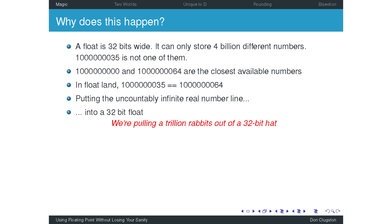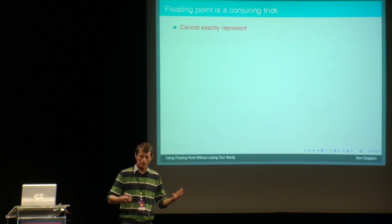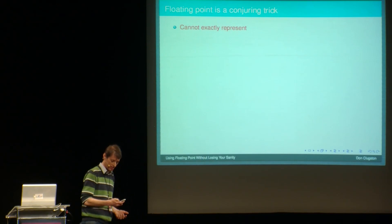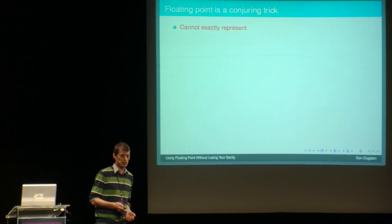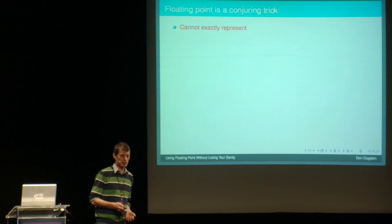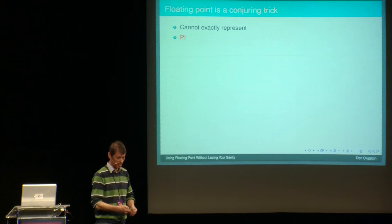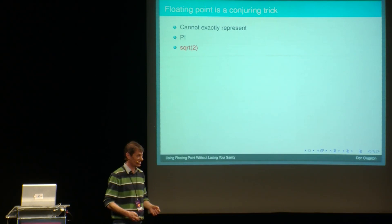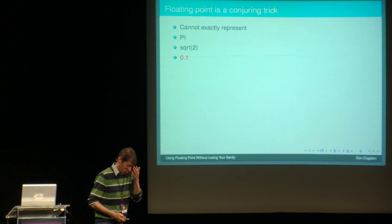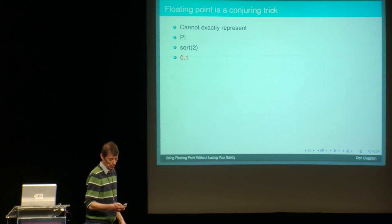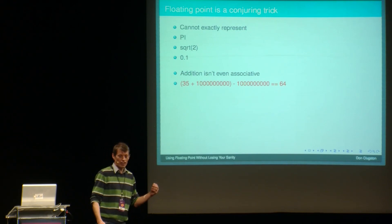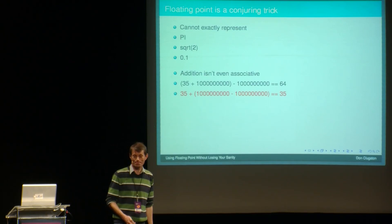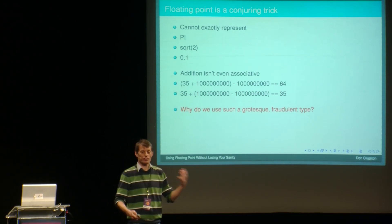You asked for a billion and 35, here's a billion and 64. So we're putting the uncountably infinite real number line from mathematics into a 32-bit float. We're pulling a trillion rabbits out of a 32-bit hat. It's magic. And so I have this model that floating point is actually a conjuring trick. We've only got these few billion numbers we can represent, and we're trying to represent, we're pretending we can represent everything. Well, if you could only have four billion numbers for maths, what would you pick? Well, you might pick pi. No, that's not in there. Square root of two? No. How about point one? No.